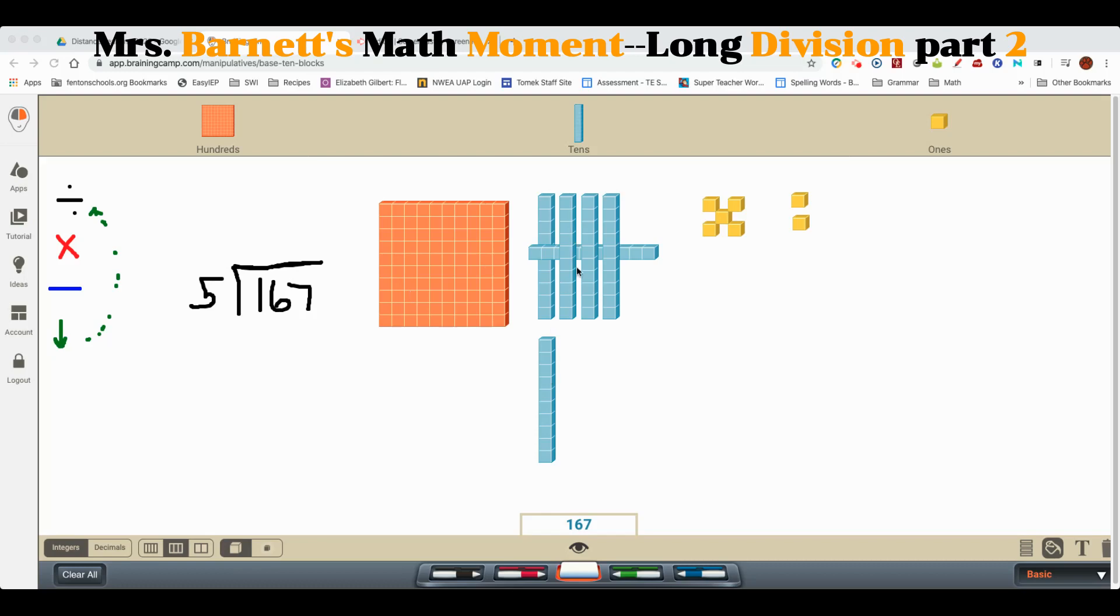Here's 167. You can see the number is always going to be down here. We need to do the same process. I cannot break this guy physically into five groups, so I need to trade him in for the next place value down, which is tens. So this will be traded into ten rods.